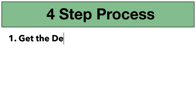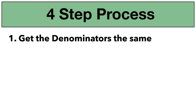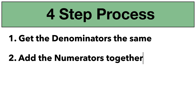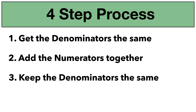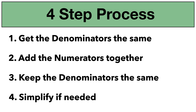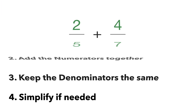So let's get into this four-step process of adding fractions with unlike denominators. Step one: get the denominators the same. Step two: add the numerators together across the top. Step three: keep the denominators the same after you've added across the top. And step four: simplify if needed. Let's jump into some examples.